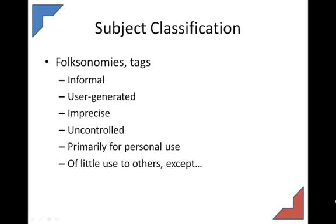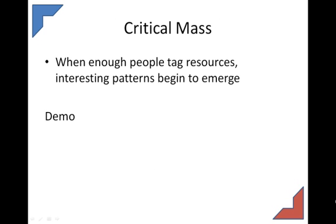In contrast, today we have folksonomies and tags. Folksonomies and tags are labels that individuals like you and me put on resources or books that indicate what that resource is about. These are informal, user-generated, imprecise, and uncontrolled. One person might type 'dog,' another might label something 'canine,' one person might say 'cat,' another 'feline.' People primarily create tags for their own use — you want to be able to find something later. That makes tags of little use to others, except when enough people tag resources, interesting patterns begin to emerge.